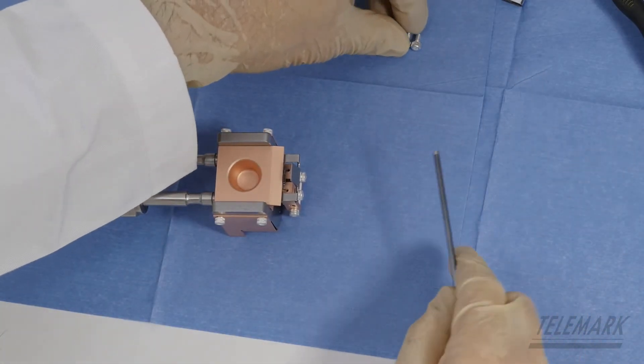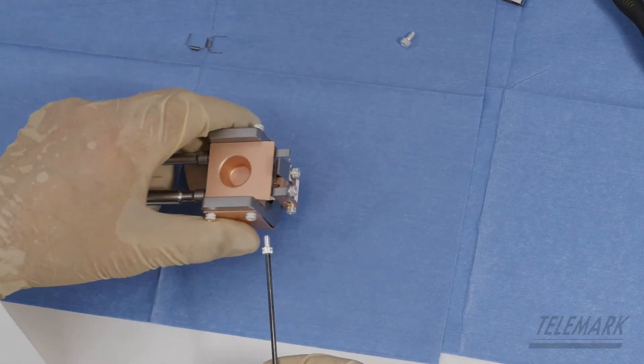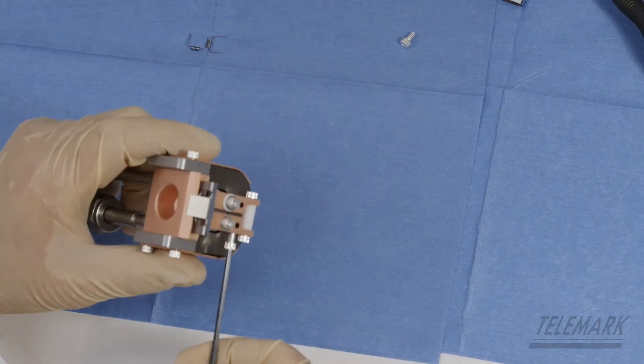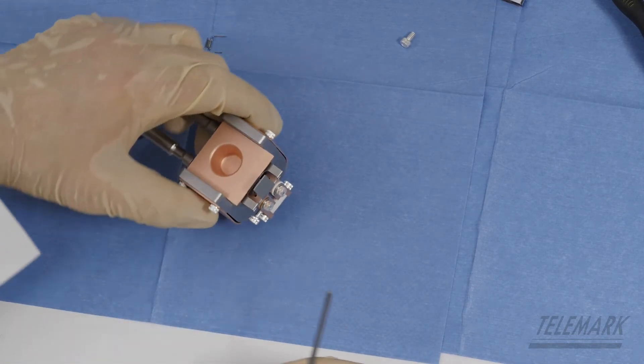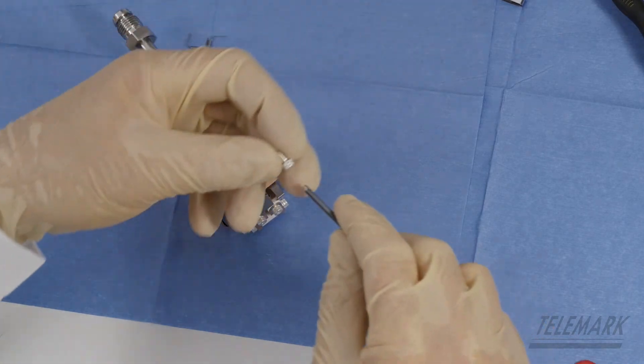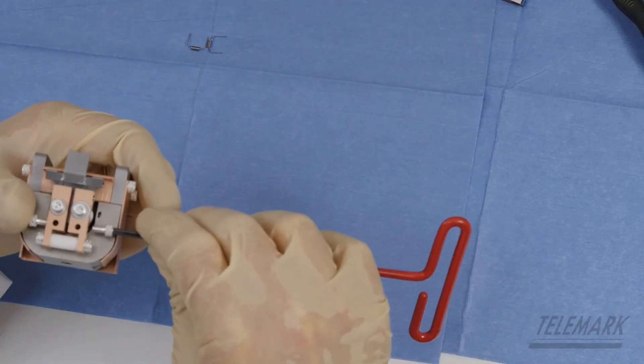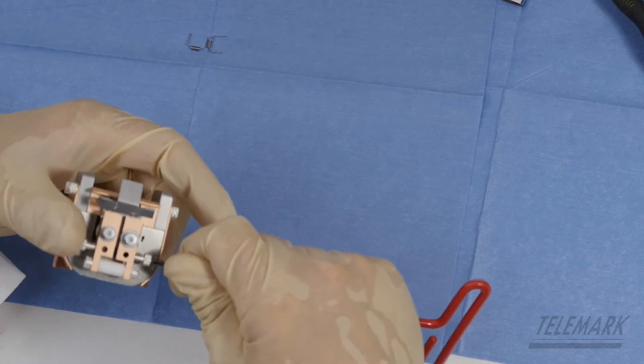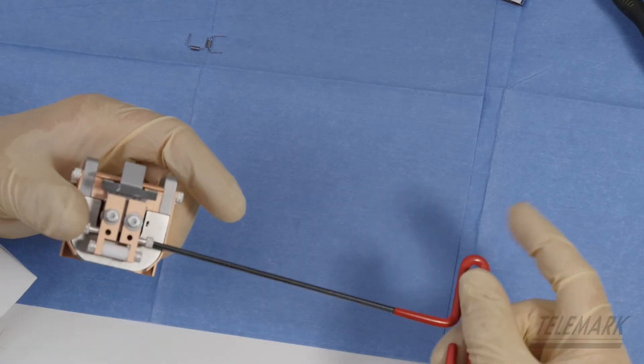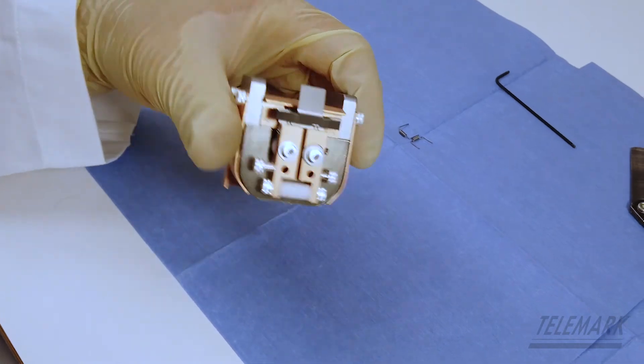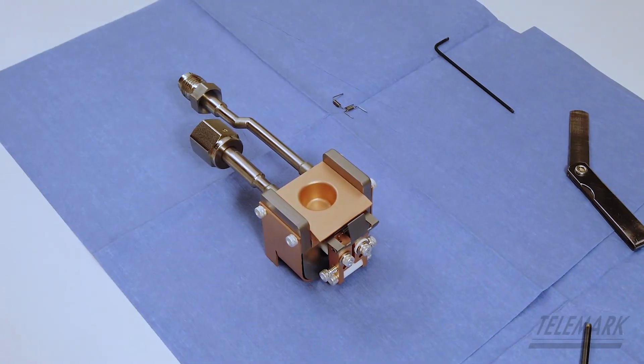Final step would be grab your 6-32 by quarter inch, put them in their little homes for locking down your high voltage leads to the emitter. And it should be ready to fire.